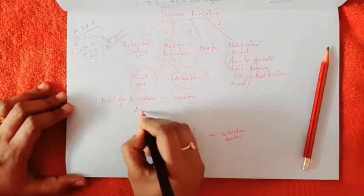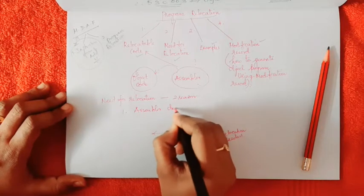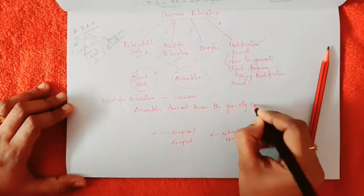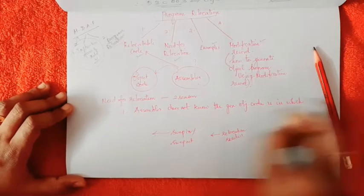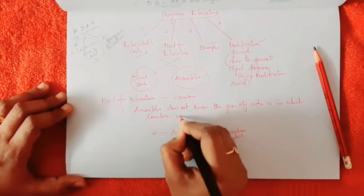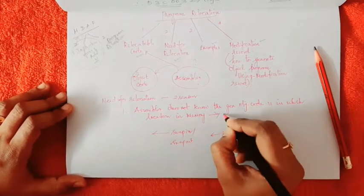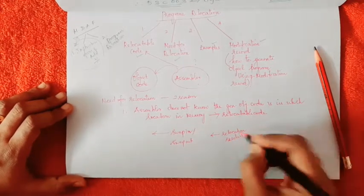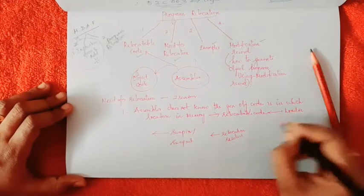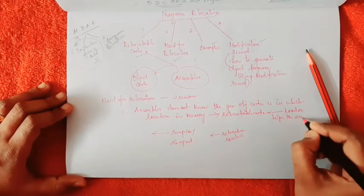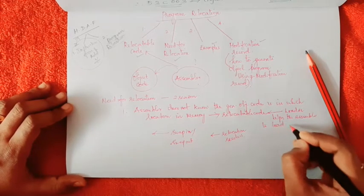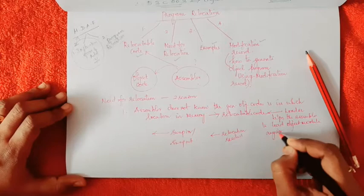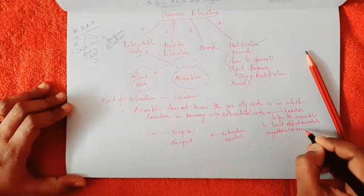The first reason written out: the assembler does not know where the generated object code is located in memory, so it generates a relocatable code. The loader helps the assembler to load the object module anywhere in memory.